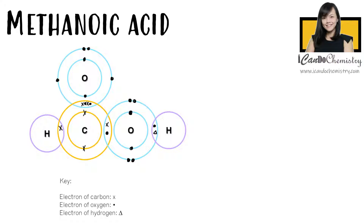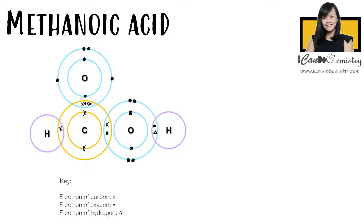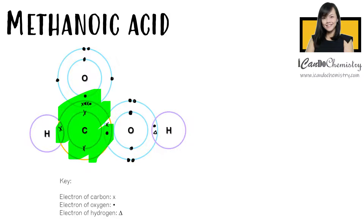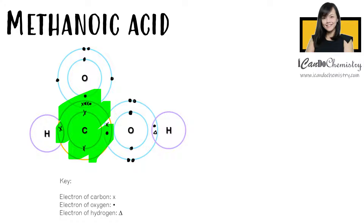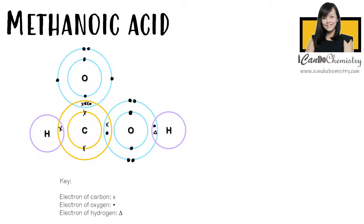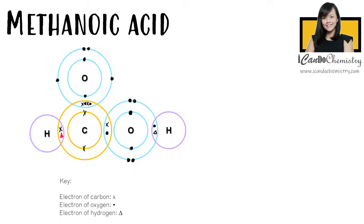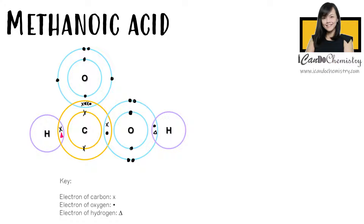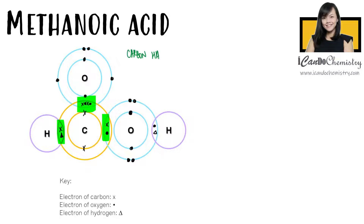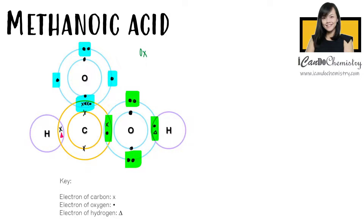The first member, methanoic acid, has one carbon. There is already one carbon in the carboxyl functional group, so we do not need to add more carbon for methanoic acid. This carbon will share its last unpaired valence electron with hydrogen. Now all the atoms have achieved a stable noble gas electronic configuration — carbon and oxygen now have eight outermost electrons, while hydrogen has two.